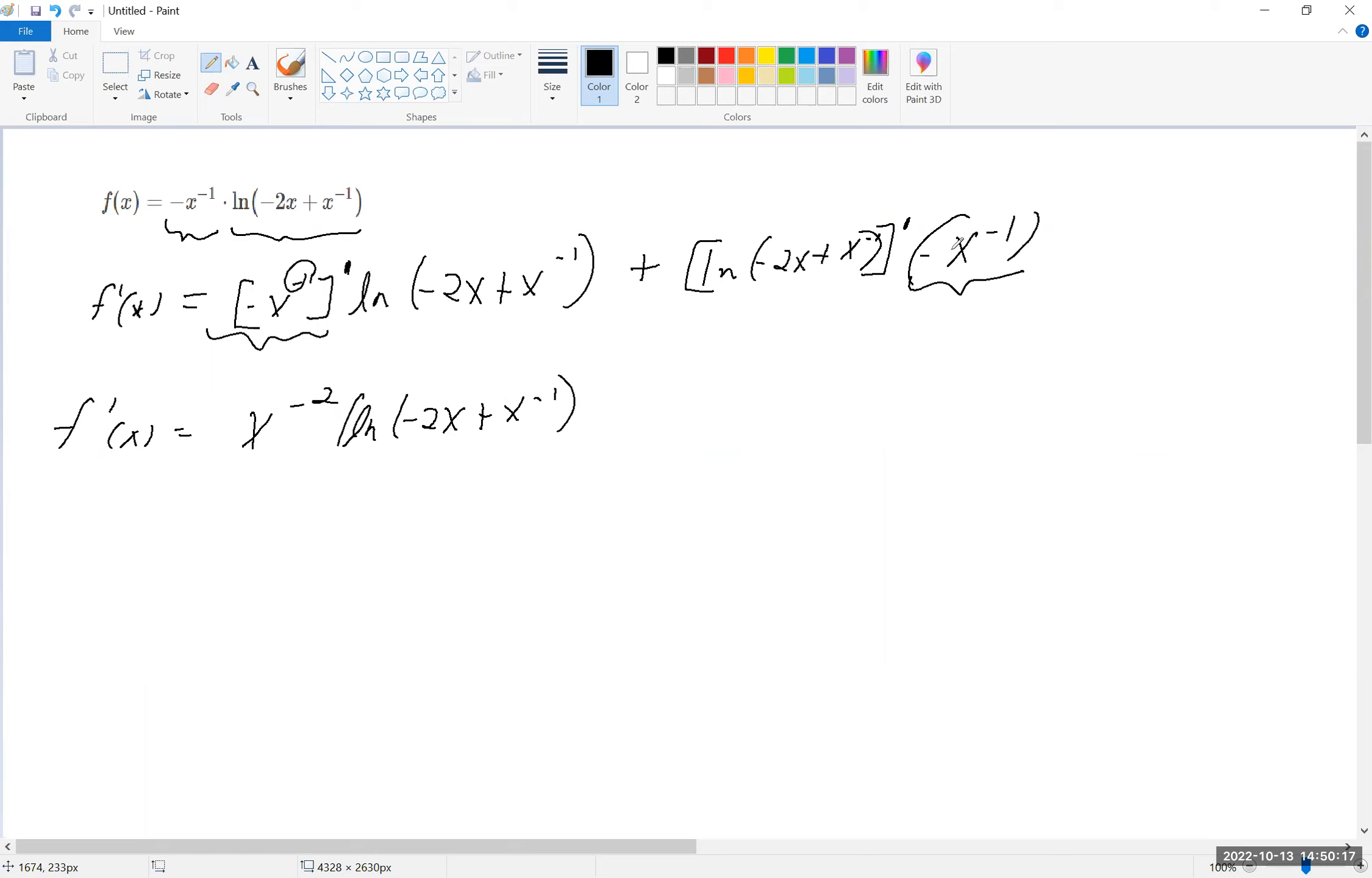Now, I'm going to bring this out to the front, just because it's easier to move it out of the way. And now I have to take the derivative of this. So this is 1 over minus 2x plus x to the minus 1. But now, because there's an inside function, I have to take the derivative of this.